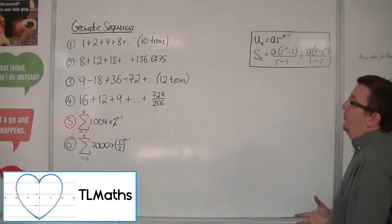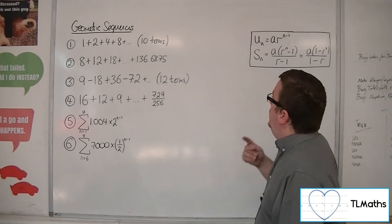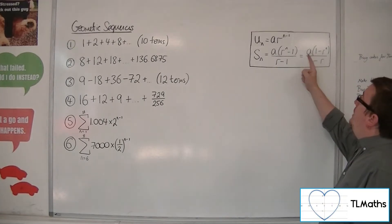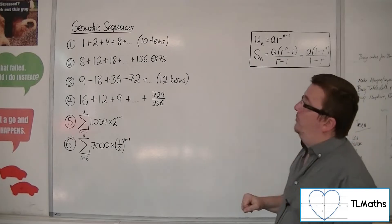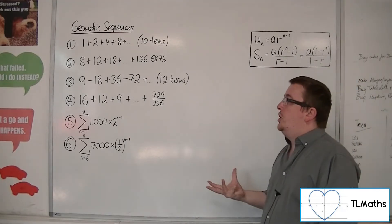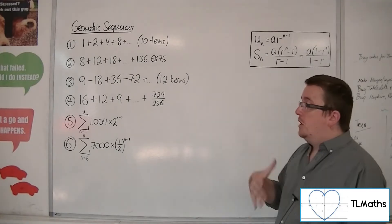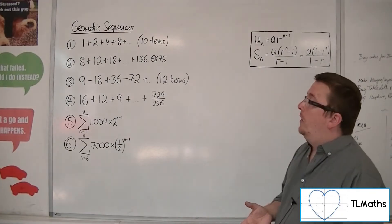Let's say I want to find the sum of each of these series, and I'm going to use one of these two formulas in order to do it, the sum to n terms. So I've put in a mixture of questions here, some where we know how many terms there are, some where we don't, and a couple in sigma notation as well.